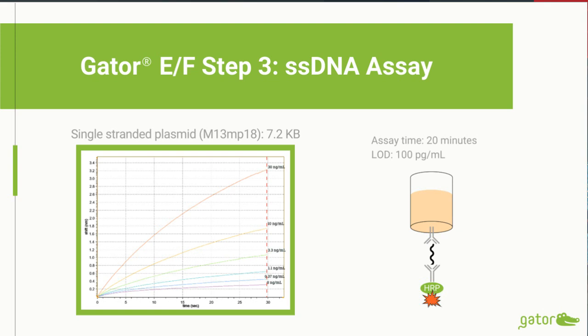The data shows a dose-response curve using single-stranded plasmid M13 as a model analyte, which is fairly close in size to AAV genomes. The total assay time is 20 minutes. The LOD, using M13 as the DNA sample, is around 100 picograms per mL. When we assay DNA derived from AAV, signals range from about 2 nanometers and higher, indicating that sensitivity of the DNA assay is not an issue at all in this method.